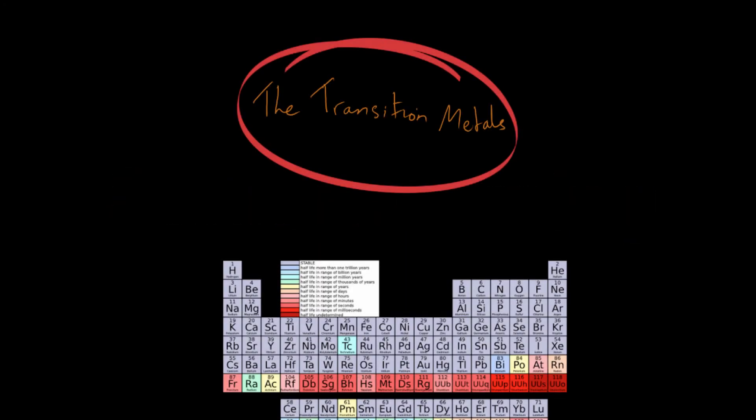Now in this video we're going to speak about the transition metals. Now in case you don't know already, the transition metals are the metals in the periodic table which are located here. So in general, just highlighting them, these are the transition metals.